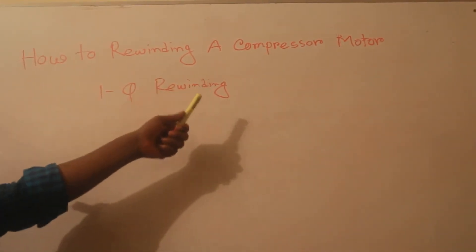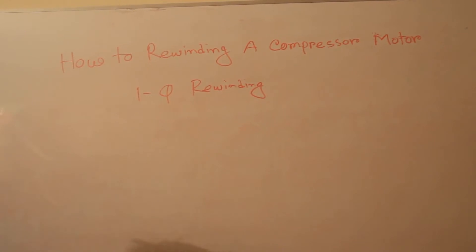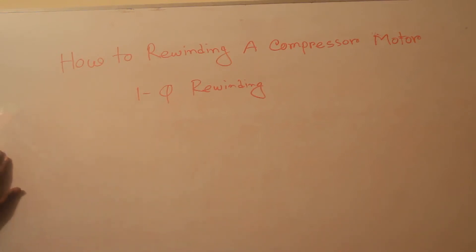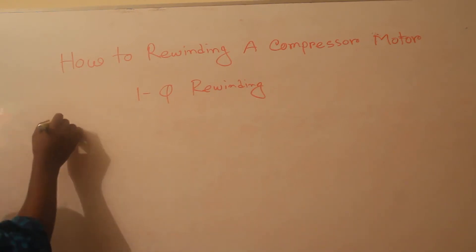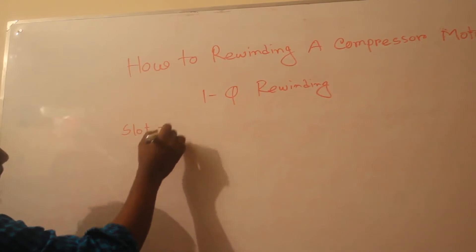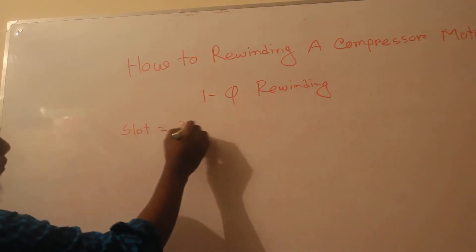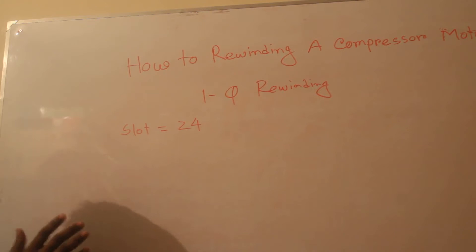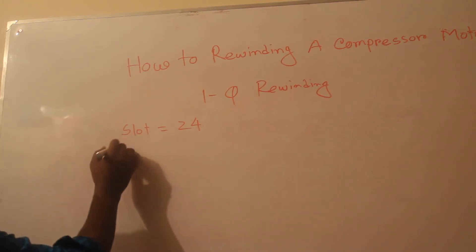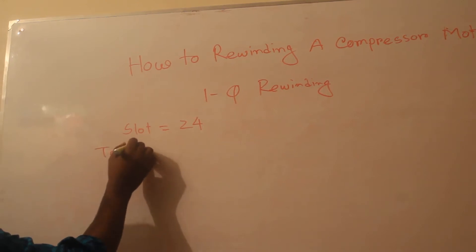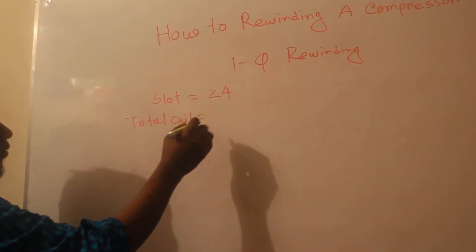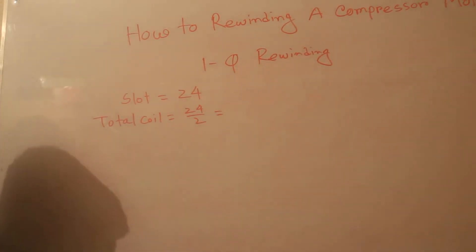Most compressor motors are 2-pole because their speed is 3000 RPM. Now we need data for rewinding this motor. First we need the slot number. This compressor motor slot number is 24, and this is basket rewinding. The total coil count is half of the slot number because it is a single layer rewinding.